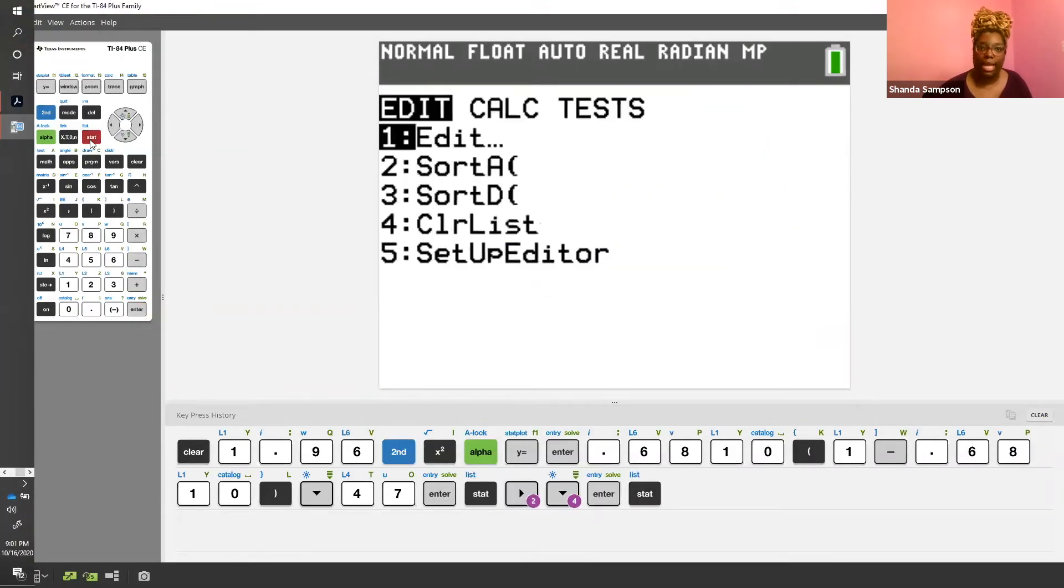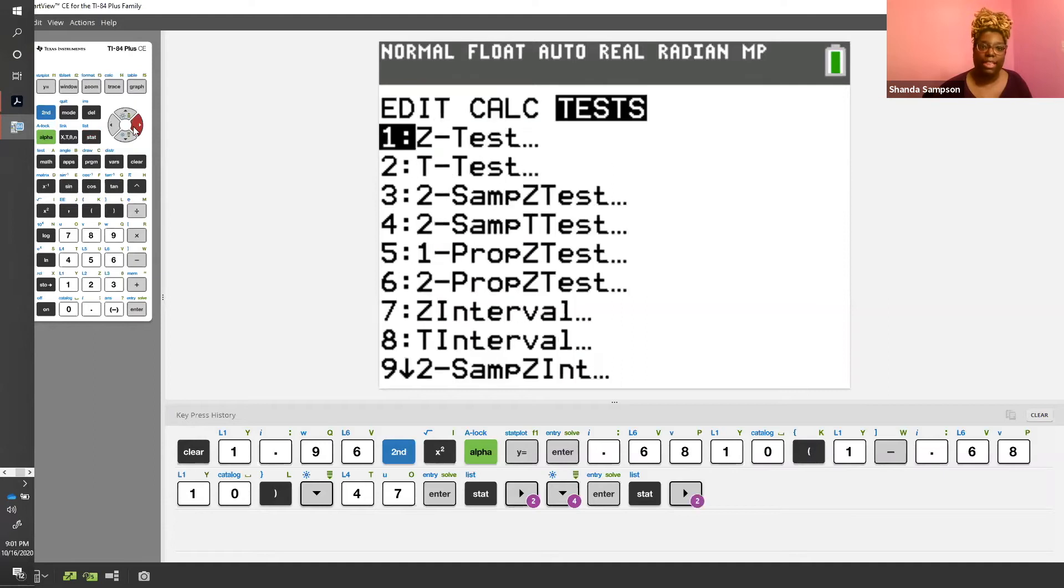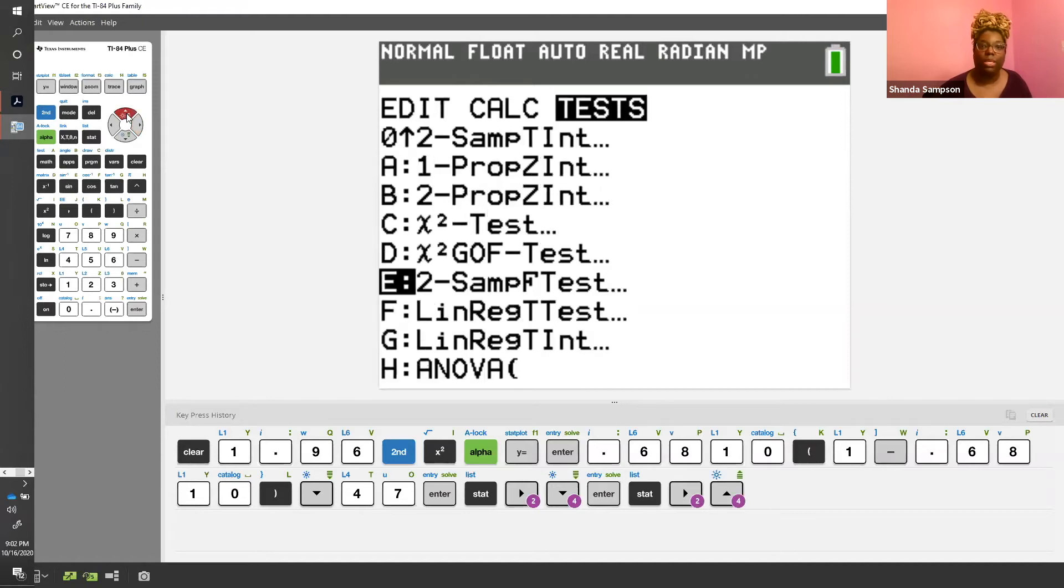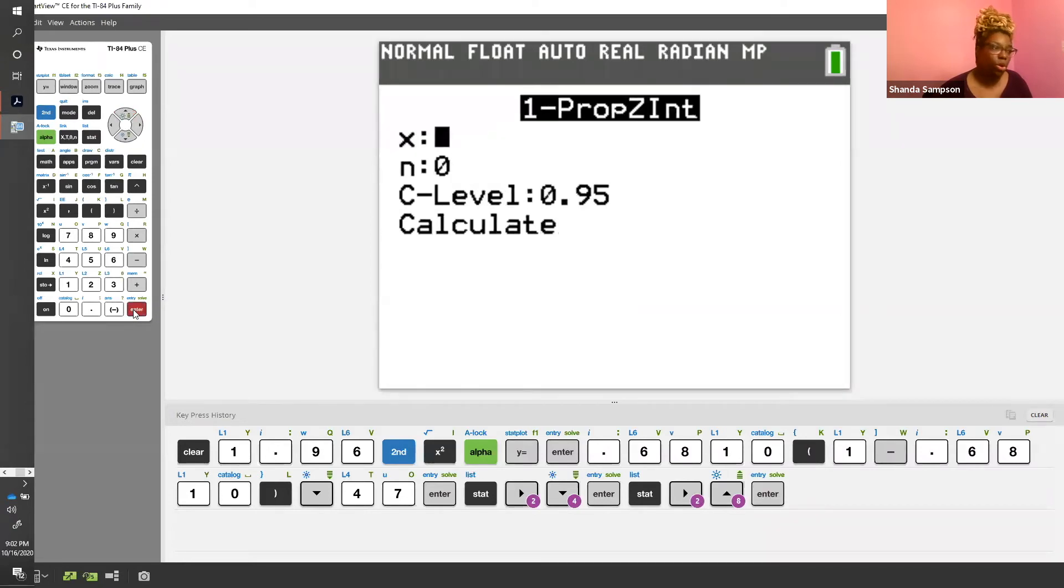So we're going to go to stat, and then we're going to go over to test. And this is going to be what? You don't see it here. If you go down, and I always go up, it's going to be a 1 prop Z interval, because we're looking for an interval. So 1 prop Z interval, 1 proportion Z interval. That means one sample. So you hit that, and what we're going to put in is our X. Now, oh my, we need X. So let's pause for a minute and go back because we never got X.